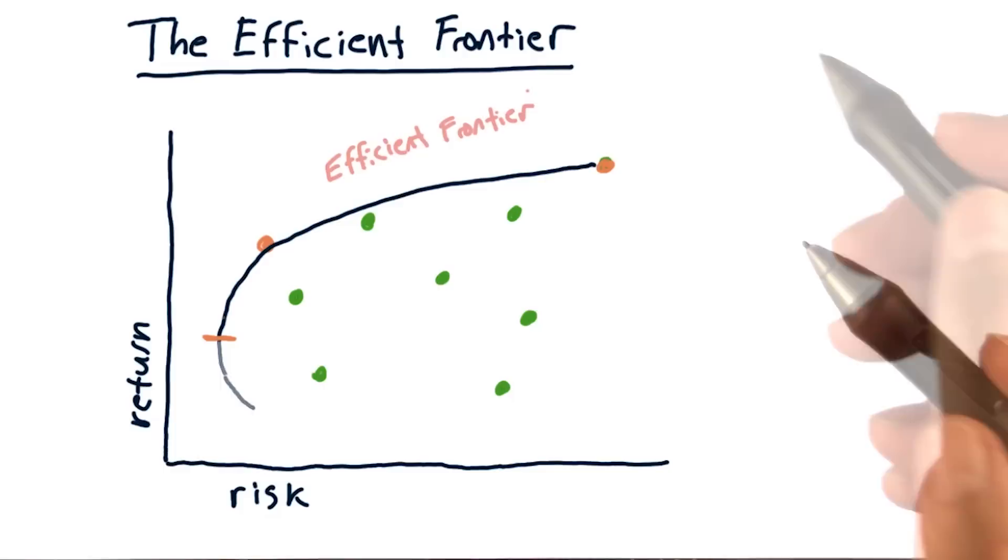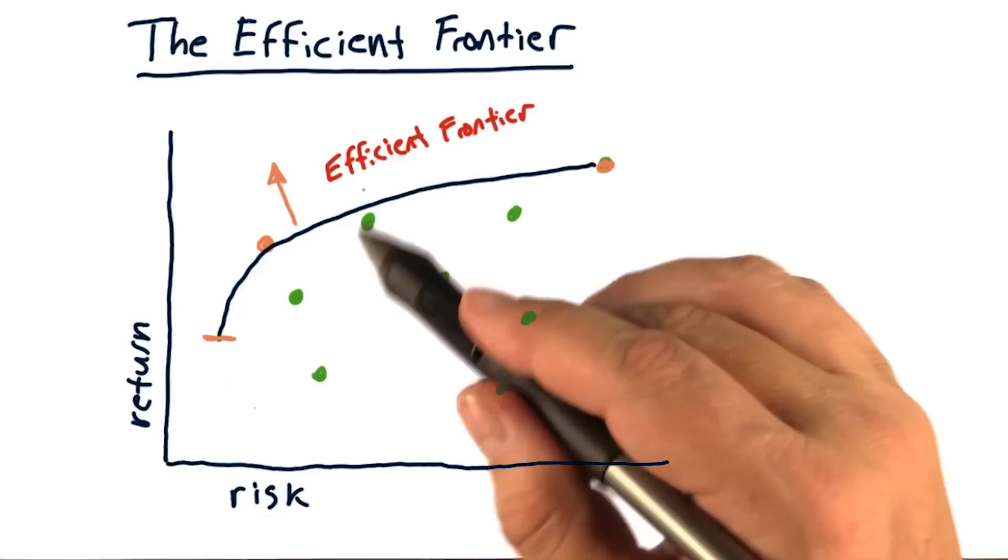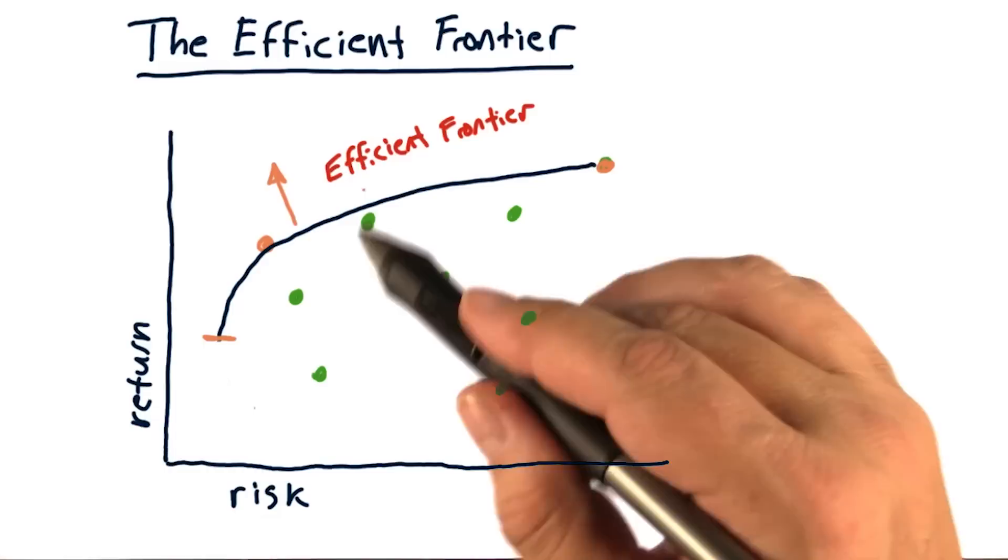As you might have guessed, the name of this line is the efficient frontier. What does that mean? It means that there are essentially no portfolios out here, and any portfolio on this side of the frontier is suboptimal in some way.